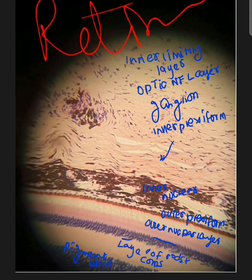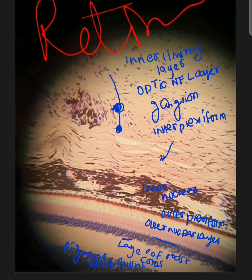You can see different color pigmentation. The inner layer is the limiting membrane, then the optic nerve fiber layer, then ganglion cells which synapse with bipolar cells. Bipolar cells make up the inner nuclear layer. Then you have the layer of rods and cones, and they interface with pigment epithelium that shows melanin granules.